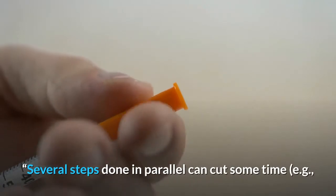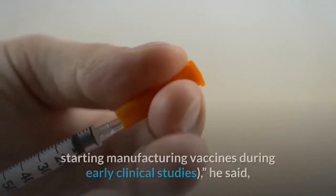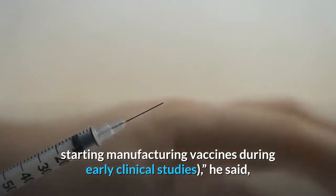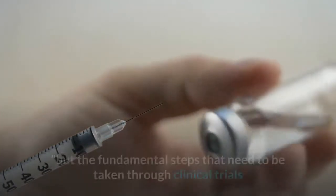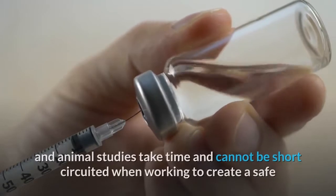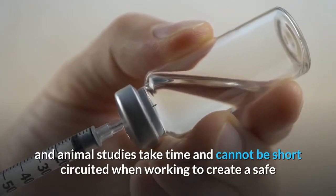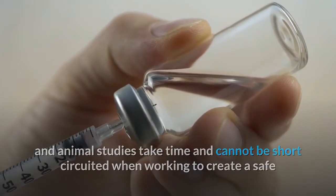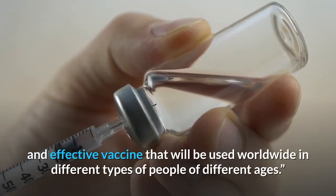Several steps done in parallel can cut some time, starting manufacturing vaccines during early clinical studies, he said, but the fundamental steps that need to be taken through clinical trials and animal studies take time and cannot be short-circuited when working to create a safe and effective vaccine that will be used worldwide in different types of people of different ages.